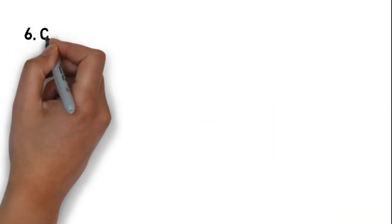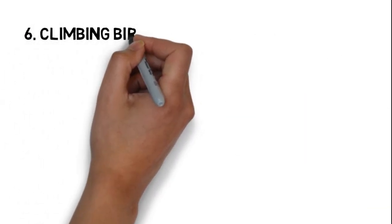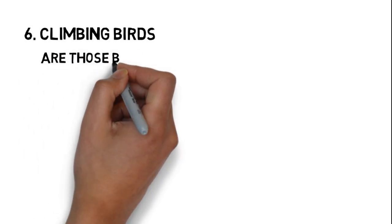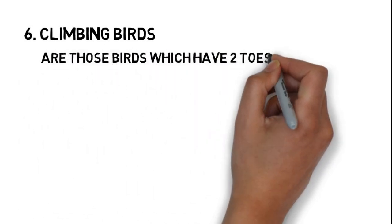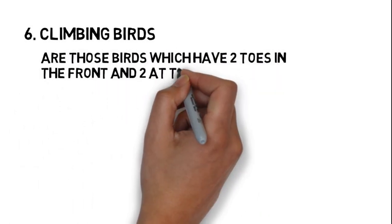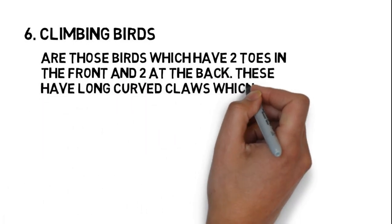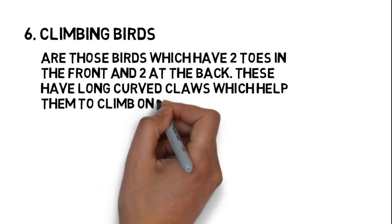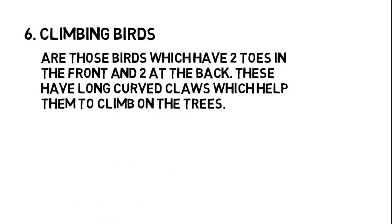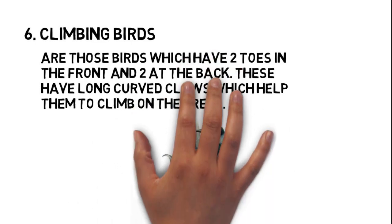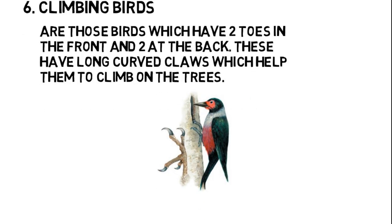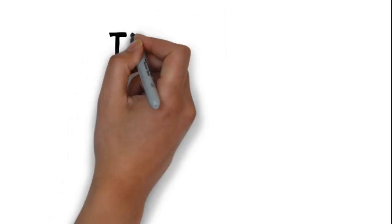Number six, climbing birds. These birds have two toes in front and two at the back, with long curved claws. These help them climb on trees. For example, woodpecker.